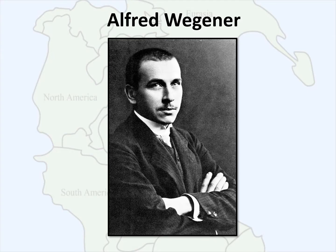Around 1912, Alfred Wegener, a German meteorologist, proposed a then radical hypothesis that the plates of the earth's crust could move and that at one time the continents were joined into a single landmass, or a supercontinent. Wegener termed the motion of the crust continental drift. During the 1900s, scientists were convinced that the continents were fixed in place, that the seafloor was flat, and that temporary land bridges formed between continents to allow for distribution of organisms globally.